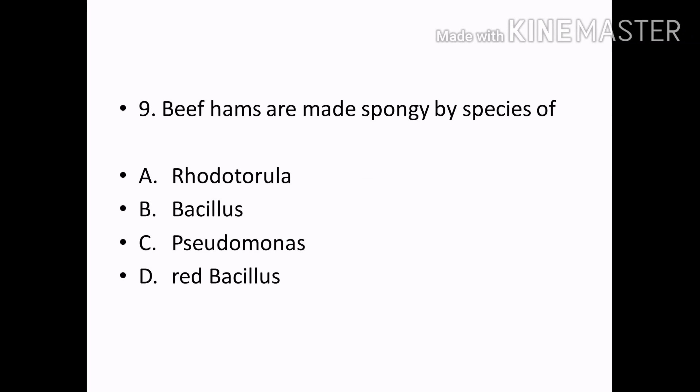Beef hams are made spongy by species of: Options — Rhodotorula, Bacillus, Pseudomonas, Red Bacillus. Correct answer: Option B — Bacillus.